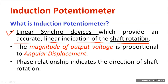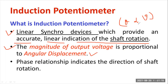It is mainly used as a position sensor. You can use the induction potentiometer as a position sensor with respect to the rotation of the shaft. The shaft rotation is directly proportional to the output voltage V. The magnitude of output voltage is proportional to the angular displacement theta. The phase relationship indicates the direction of shaft rotation.